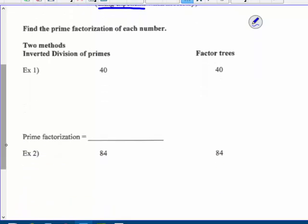Find the prime factorization of each number. There are two methods, the inverted division method. Let's start with our composite number 40 and think, what factors are prime that I can take out of that? I start with the smallest one, which is 2. I can take a 2 out of 40, 2 times 20.